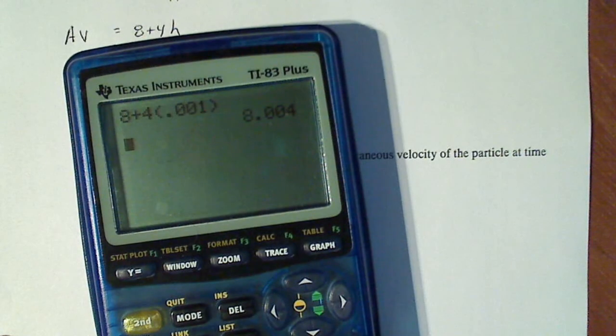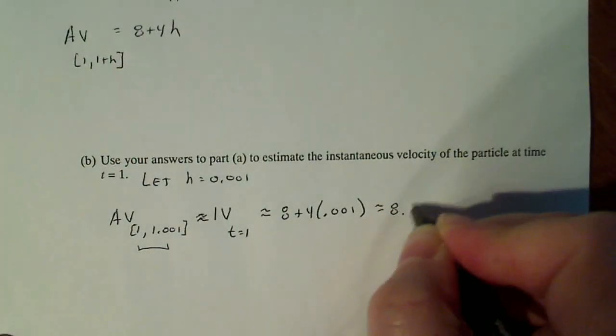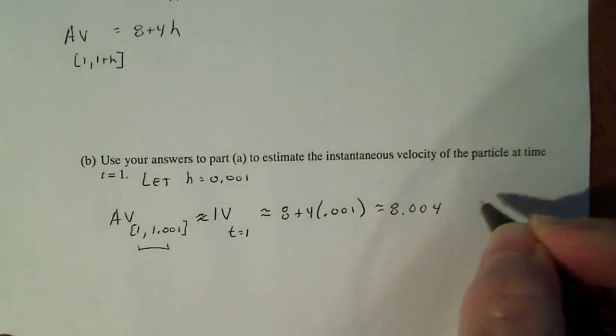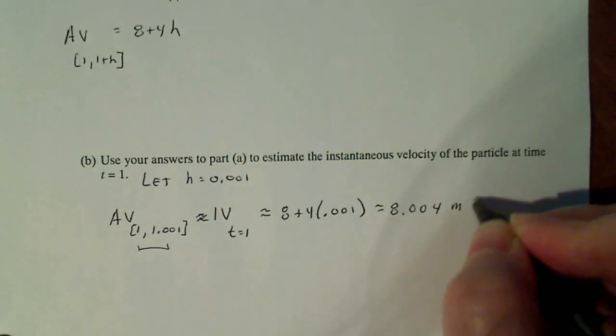And I get 8.004. So my instantaneous velocity is about 8.004 meters per second.